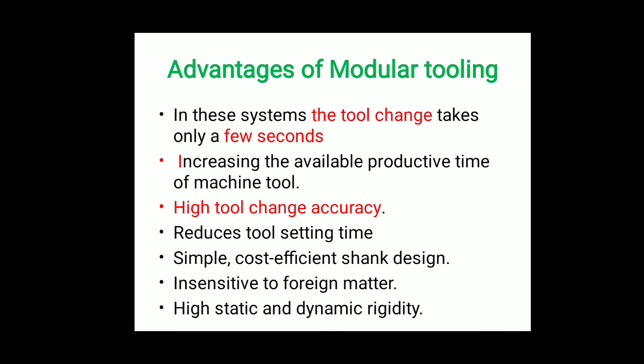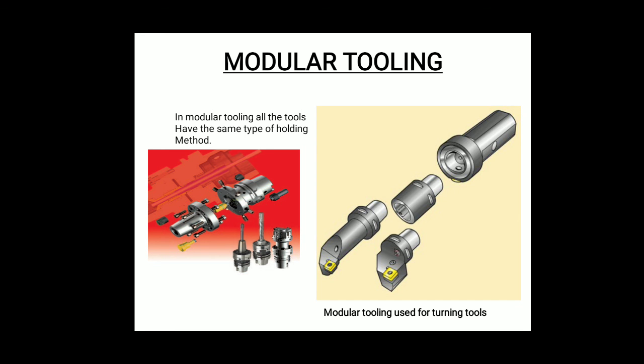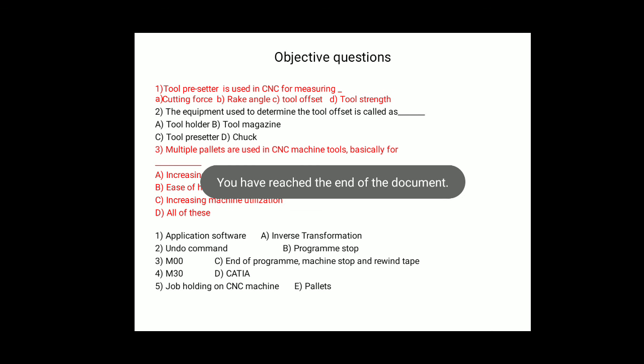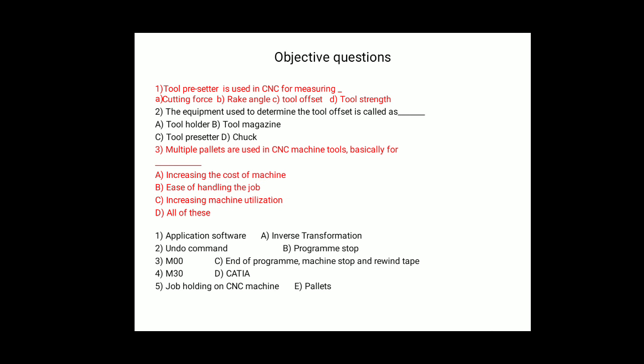These are some sample objective questions — go through them to get an idea of what we have studied. This is our chapter seven: Tooling for CNC Machines. Thank you very much.